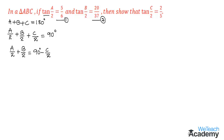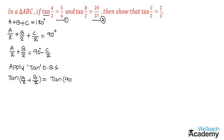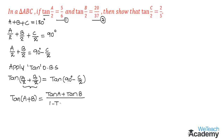Using the compound angle formula — tan(A + B) equals tan(A) plus tan(B) divided by 1 minus tan(A)tan(B) — and noting that the right-hand side is in the form of tan(90° minus θ), we apply the formula tan(90° minus θ) equals cot(θ). Using both these formulas, let us substitute the values.